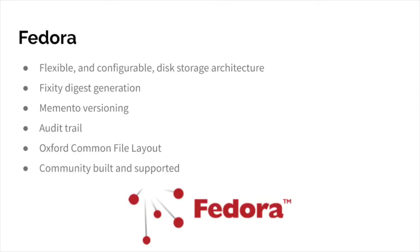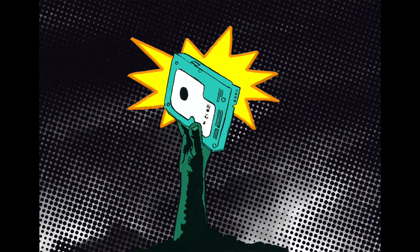Although the storage layer in Islandora is ultimately flexible, it's designed to work with Fedora. This is an open source community-built and supported project that provides flexible and configurable disk storage architecture. From Fedora, Islandora gains fixity digest generation, memento versioning — which you may know as the standard supported by the Wayback Machine — an audit trail, and with Fedora 6 we will have access to the Oxford Common File Layout. OCFL is an application-independent approach to the storage of digital objects in a structured, transparent, and predictable manner, designed to promote long-term access and management of digital objects within digital repositories.